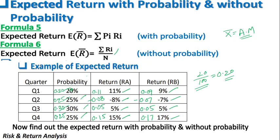Returns for Stock A and Stock B are given for all 4 quarters. Among all four values, one value is negative for both Stock A and Stock B. After giving this problem, what is being asked of us: find out the expected return with probability and without probability. We have to solve once considering the probability values and another time without considering the probability values for both Stock A and Stock B.